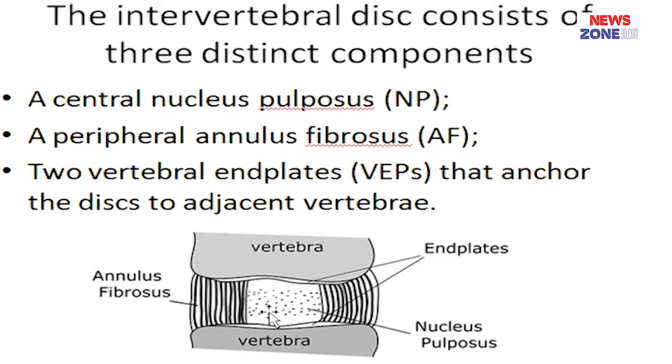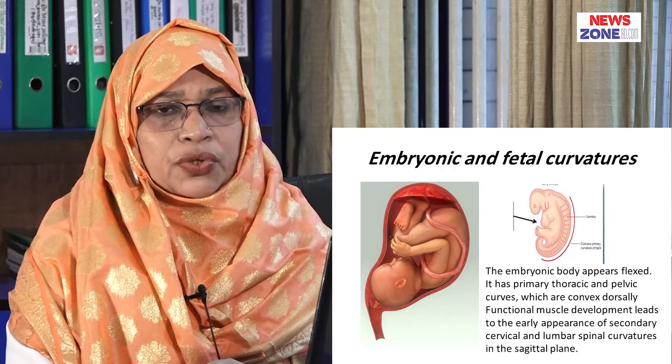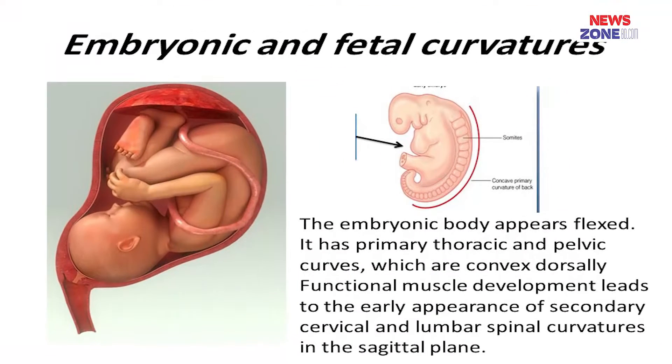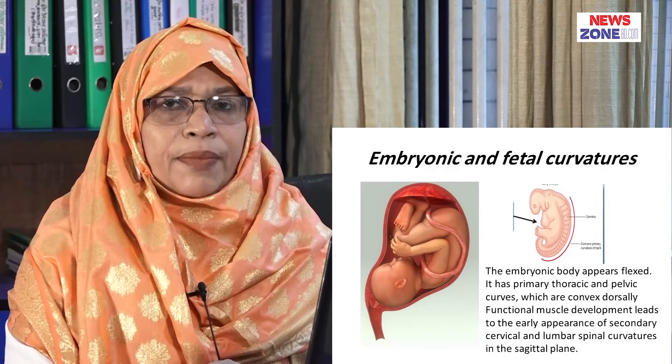The curvature of the vertebral column develops from intrauterine life to adulthood. There are two types of curvature: primary and secondary. The primary curvature in embryonic or fetal life is a single flexed curvature with the concavity forward — the thoracic and pelvic curvatures develop as primary. After that, the secondary curvature develops due to functional muscle development, leading to the formation of the lumbar and cervical curvatures.